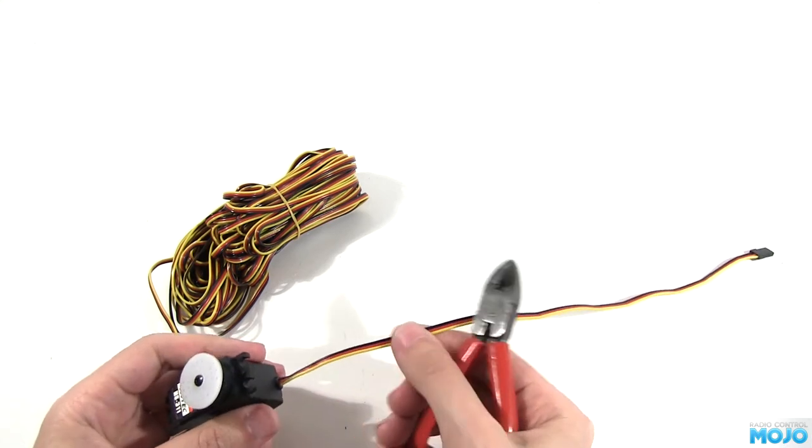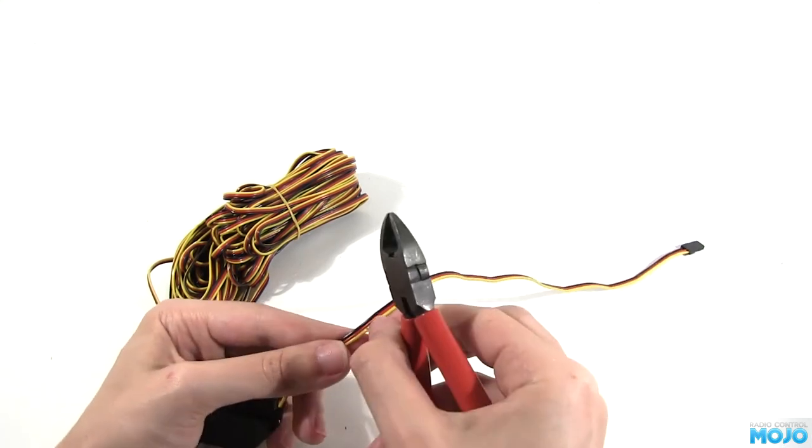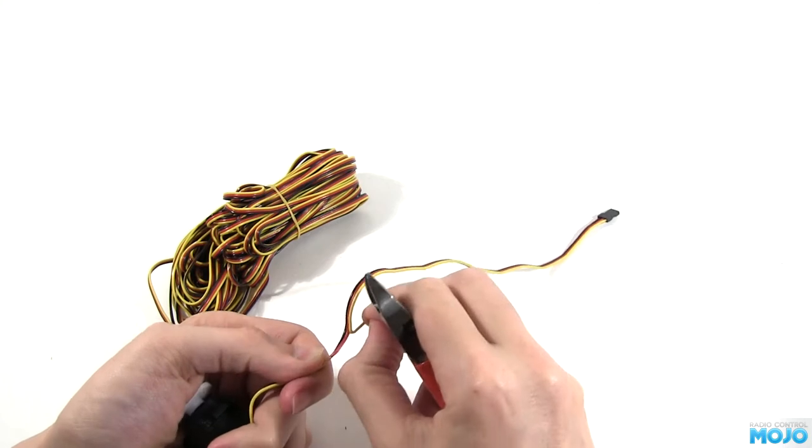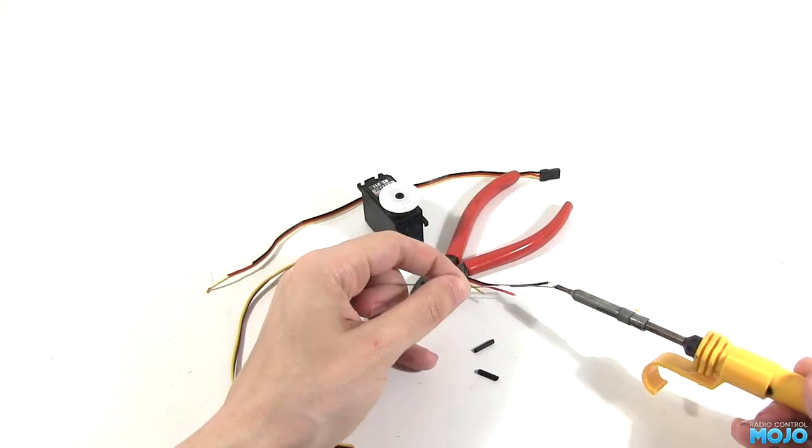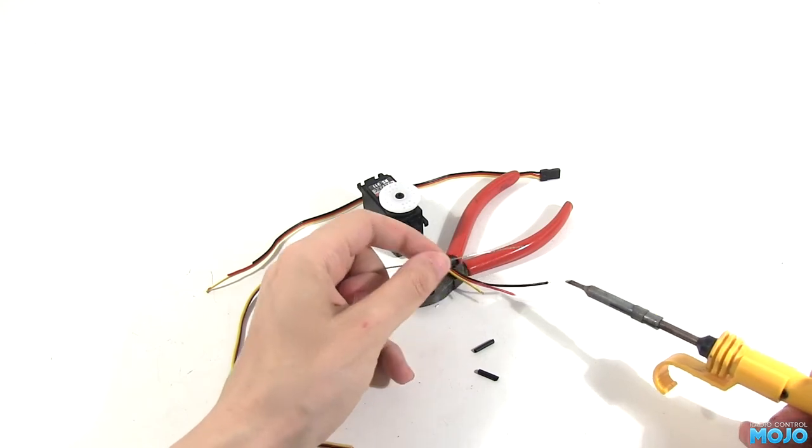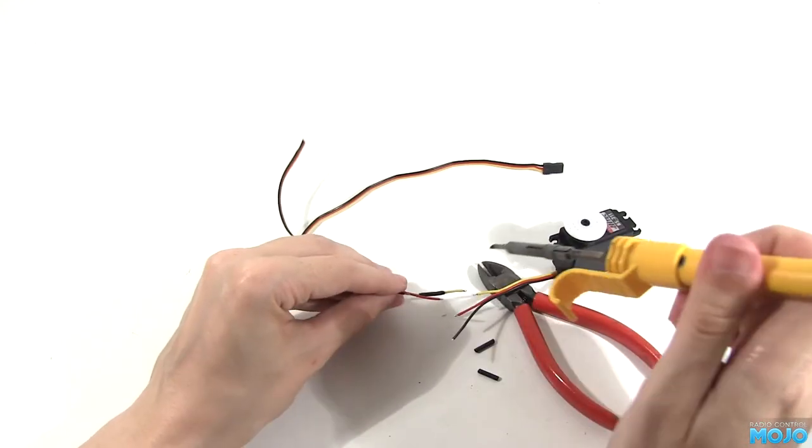When you're sure it's good to go, get the cutters out and cut the three wires up near the servo end, stepping the cuts by a centimeter or so. Do the same with a length of new wire. Strip and tin the ends, pop some heat shrink on, and solder them together.